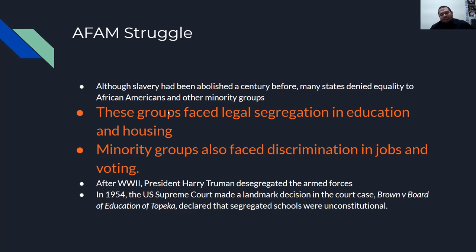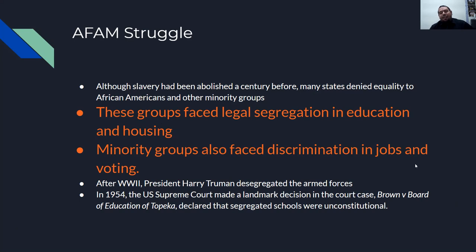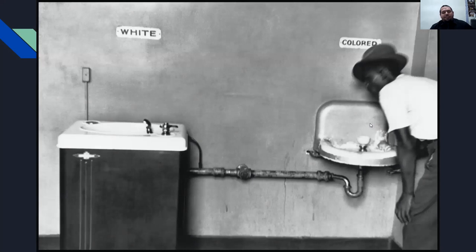After World War II, President Harry Truman desegregated the armed forces. And in 1954, the U.S. Supreme Court made a landmark decision in Brown v. Board of Education of Topeka, declaring that segregated schools — separate but equal — was a false and unconstitutional statement, as they were separate but definitely not equal.